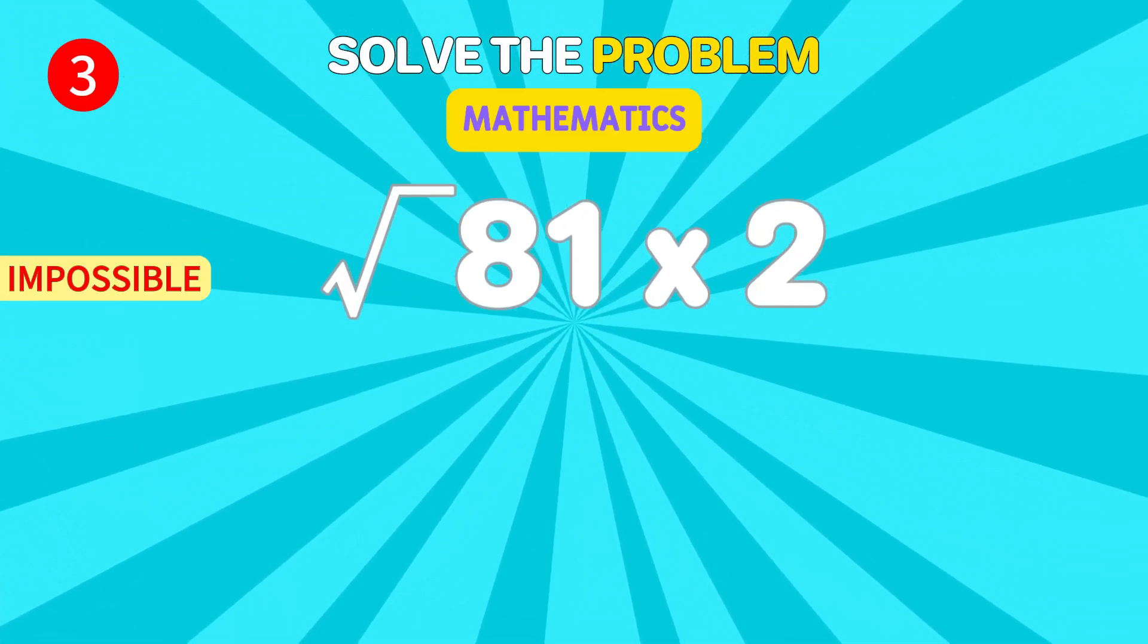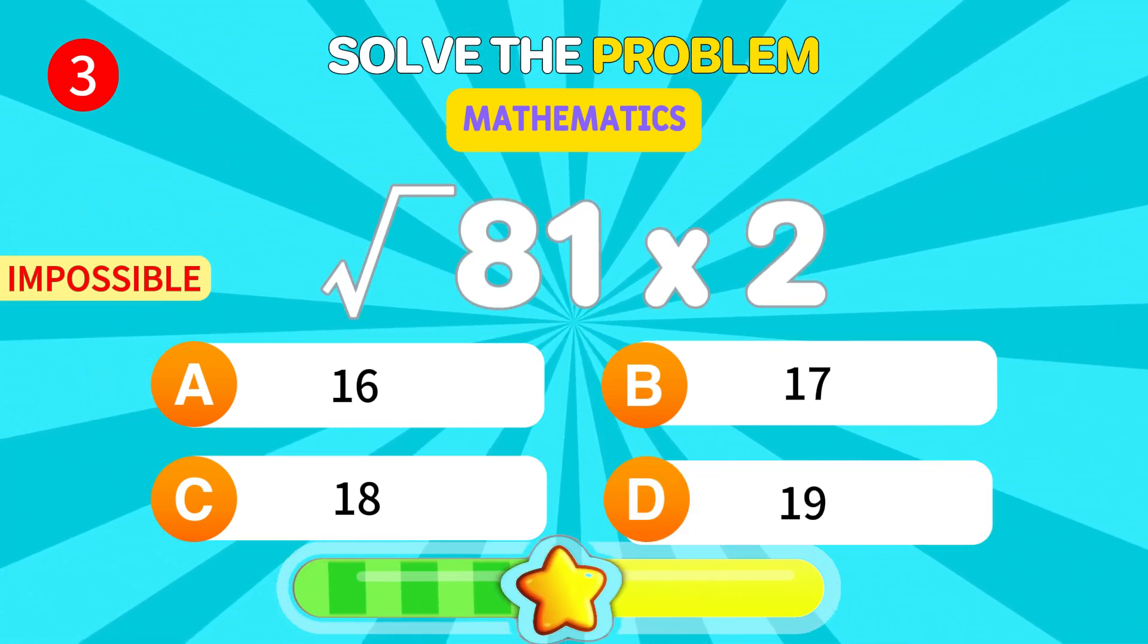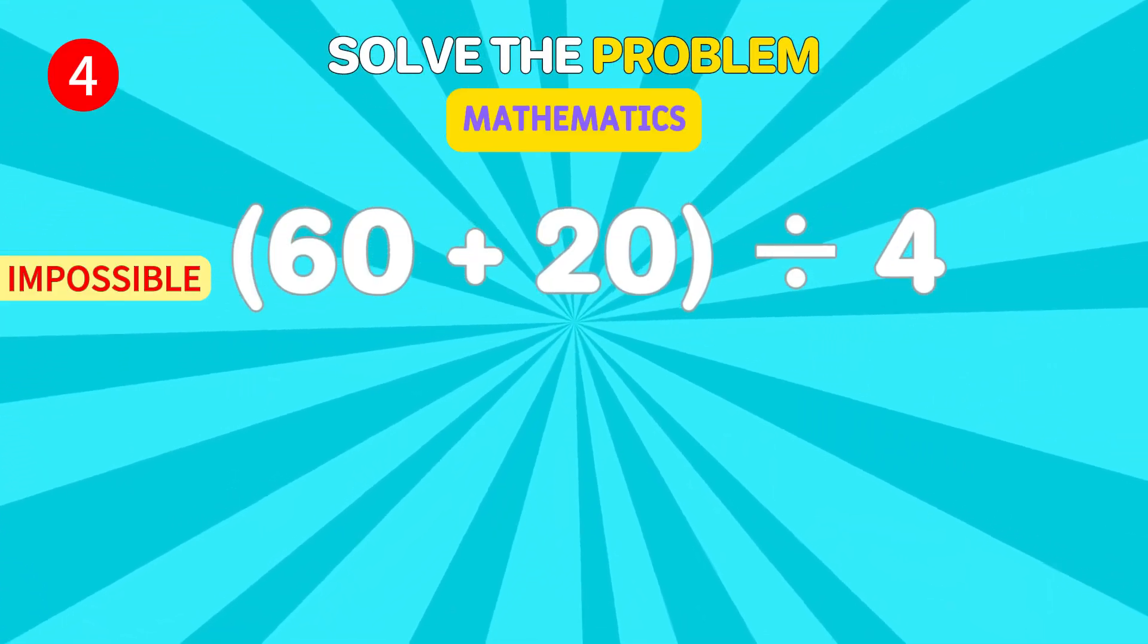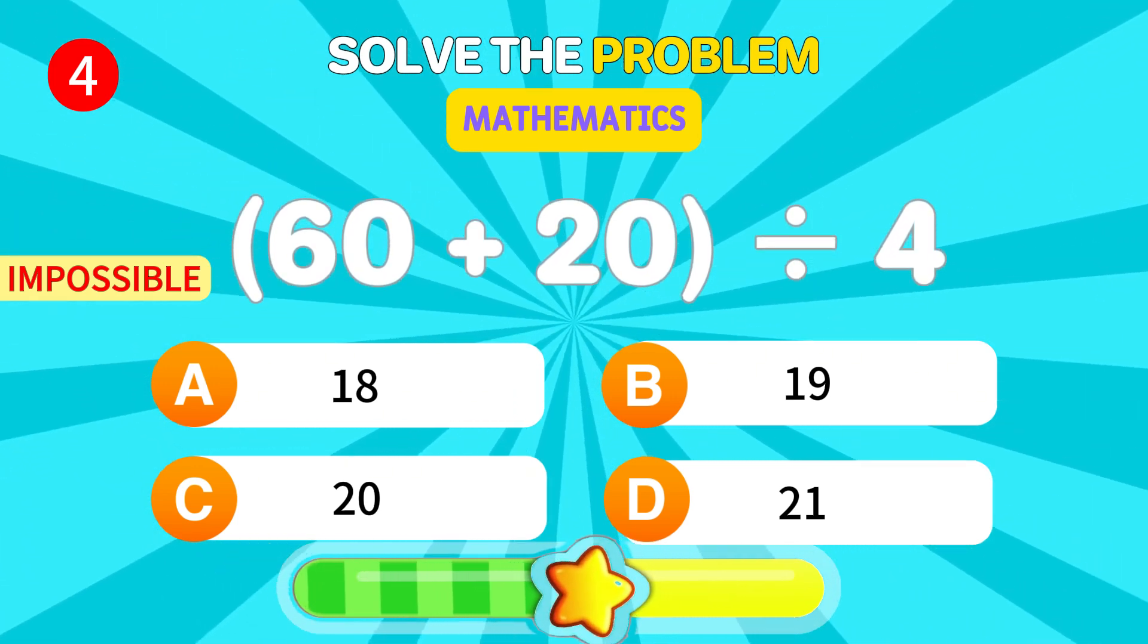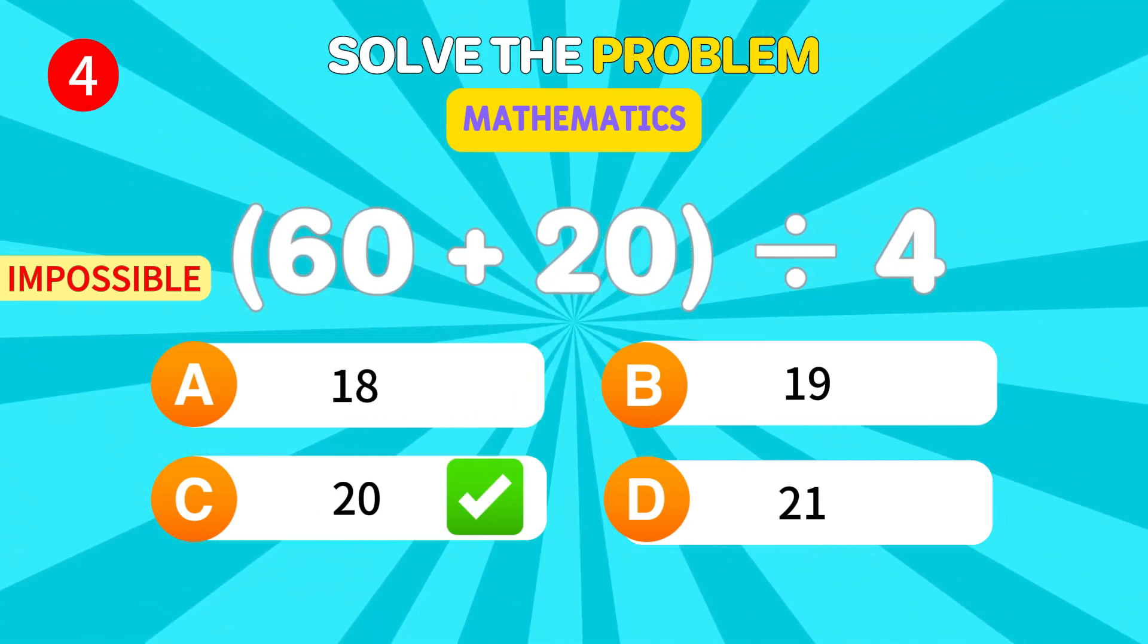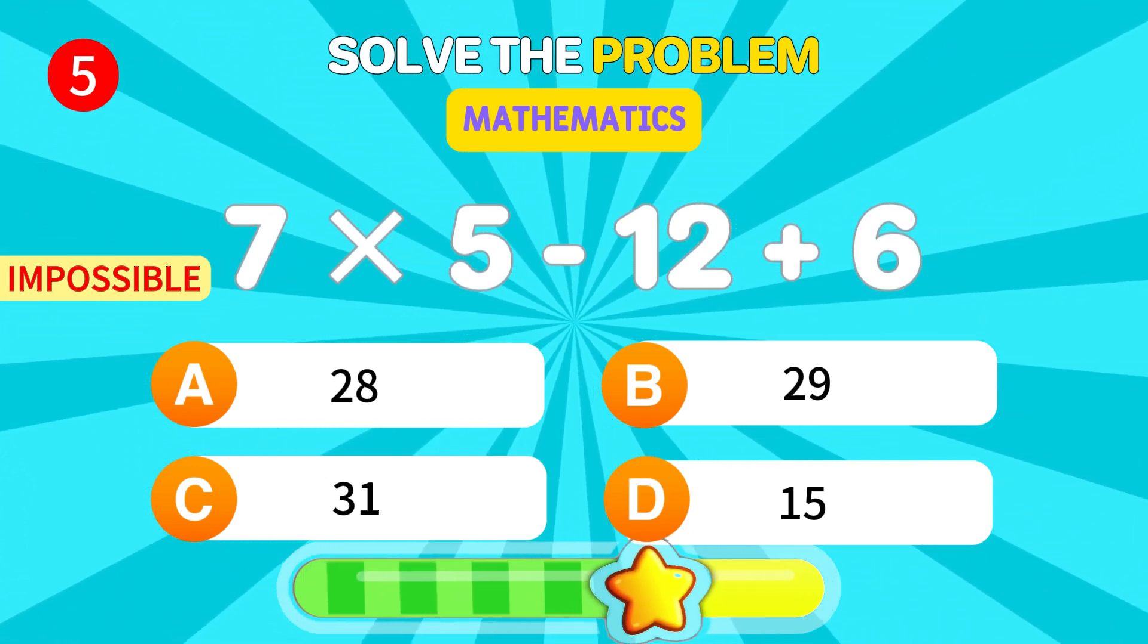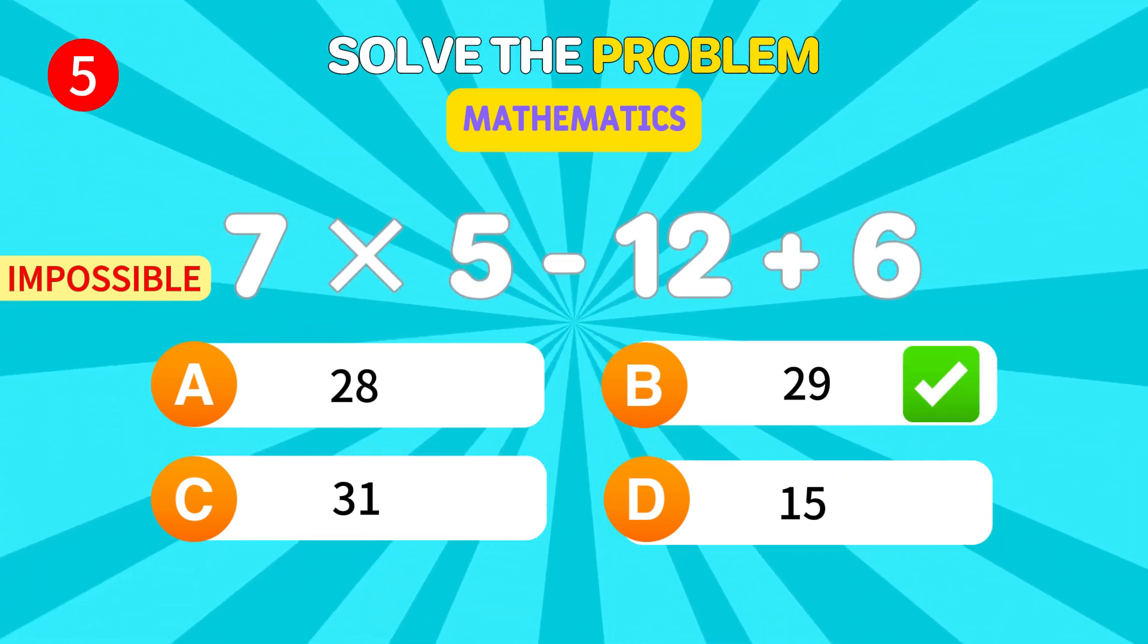What's the square root of 81, then multiply by 2? 18. Outstanding. Add 60 and 20, then divide by 4. 20. Amazing. Multiply 7 times 5, subtract 12, then add 6. 29. Impressive.